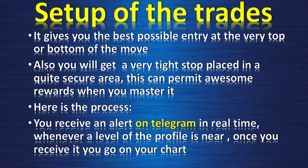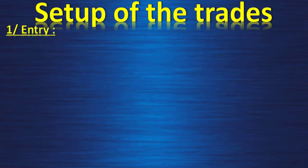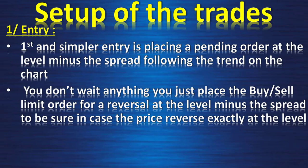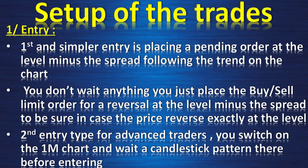You receive an alert on Telegram in real time whenever a level of the profile is near. Once you receive it, you go on your chart. For your entry, the first and simpler entry is placing a pending order at the level minus the spread, following the trend on the chart. You just place the buy or sell limit order for a reversal at the level, minus the spread, to be sure the price reverses exactly at the level. The second entry type, for advanced traders, is to switch to the 1-minute chart and wait for a candlestick pattern before entering.